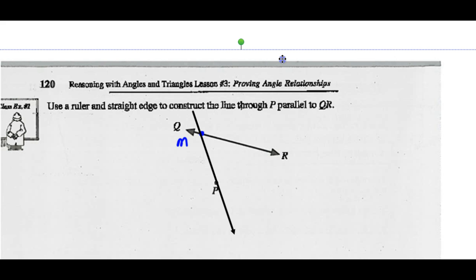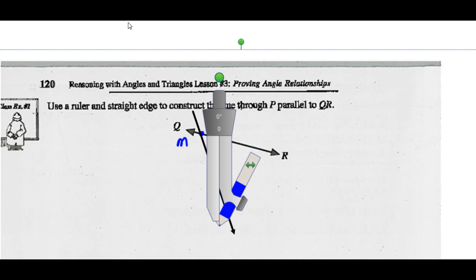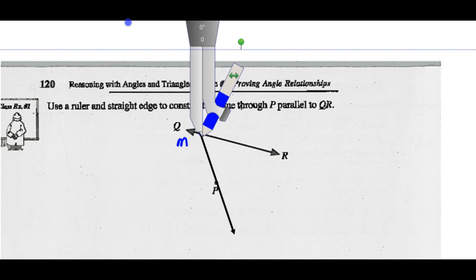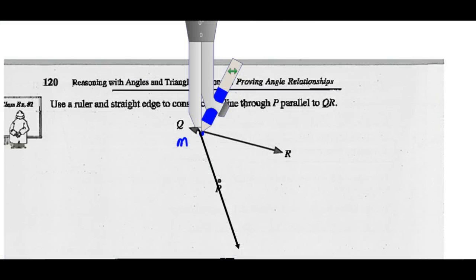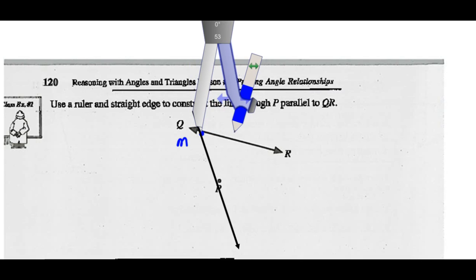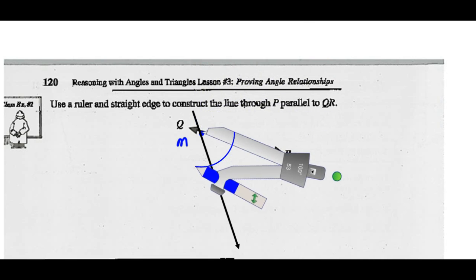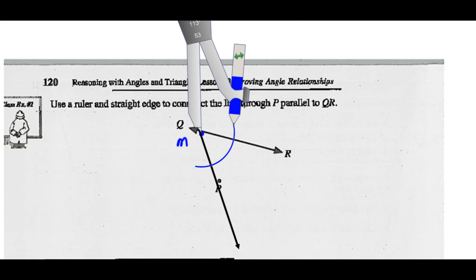Step three says: use a compass, construct an arc centered at M. Make sure it goes through both lines Q, R, and the new line we just drew. We've got the compass set up — let's extend it so it cuts through both lines and draw that arc. Now that we've intersected these two lines, let's label these points C and D as the instructions say.